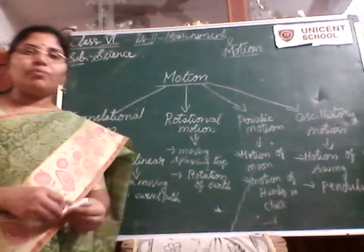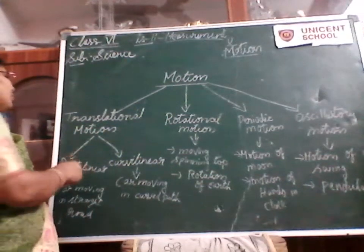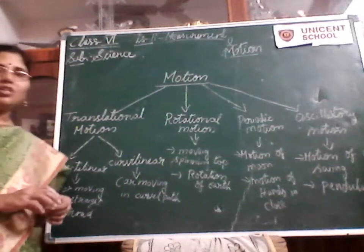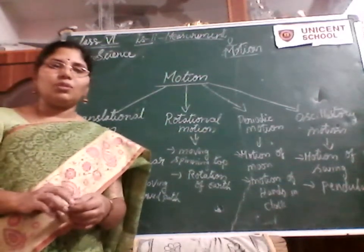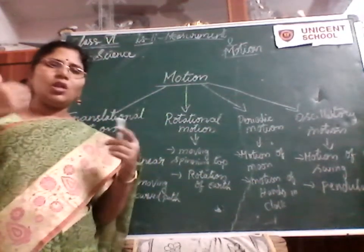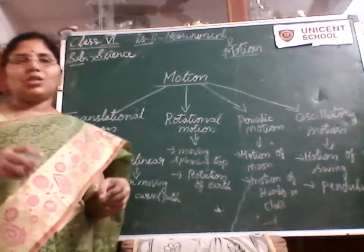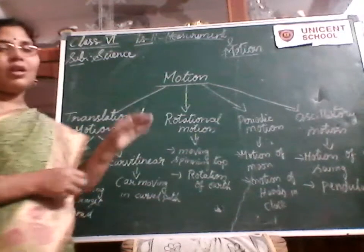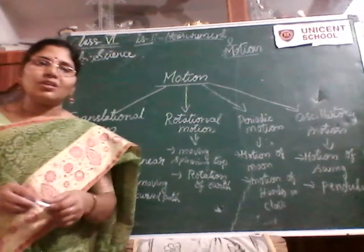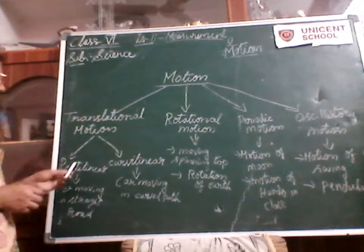Let us see with a few examples. Coming to the first kind of motion — translational motion. Translational motion is the movement of an object along with all its parts, where all the particles and parts of that object move parallel to each other at particular intervals of time. Translational motion is again divided into two categories.